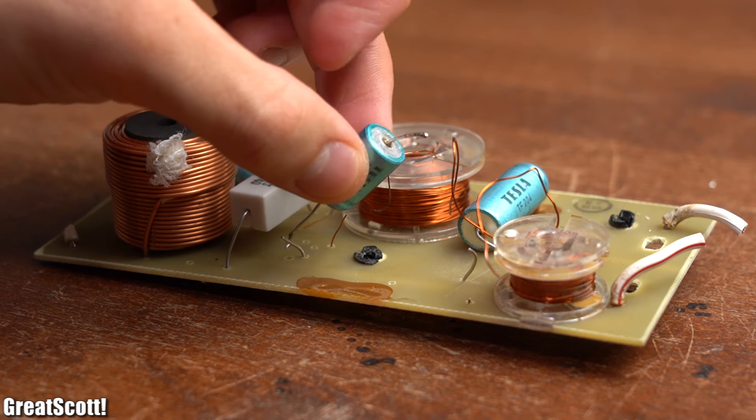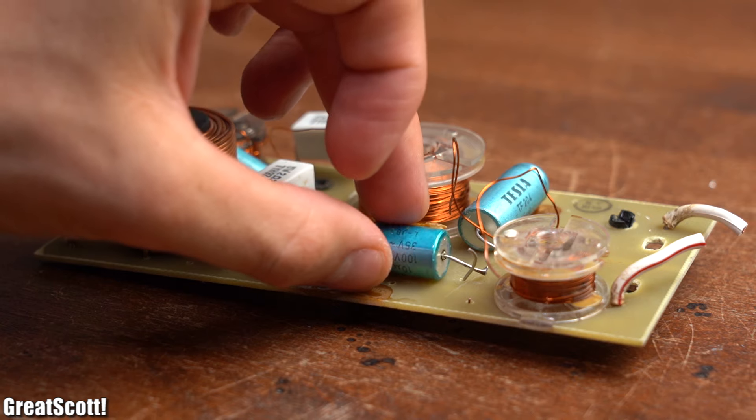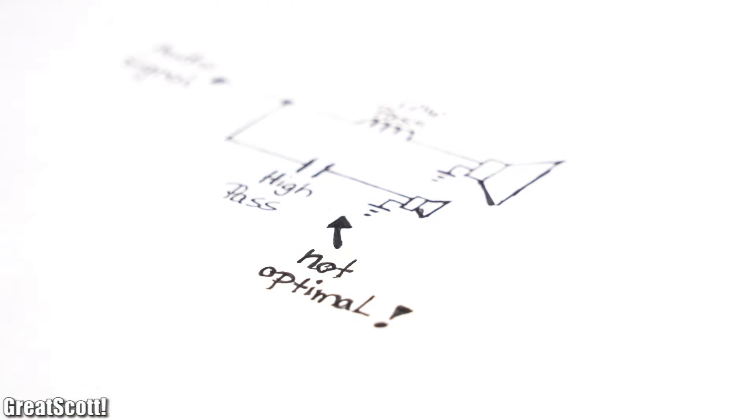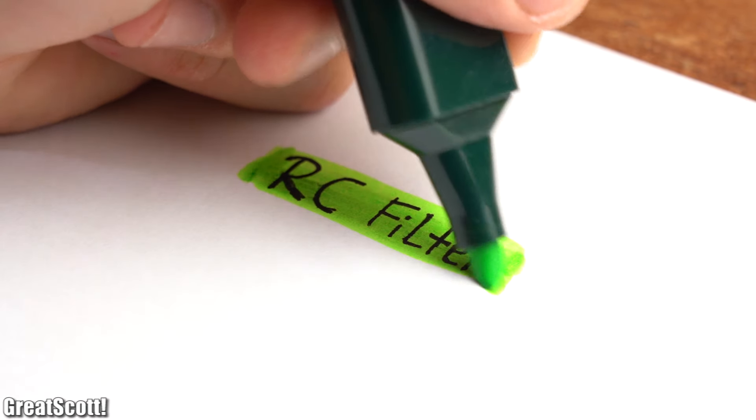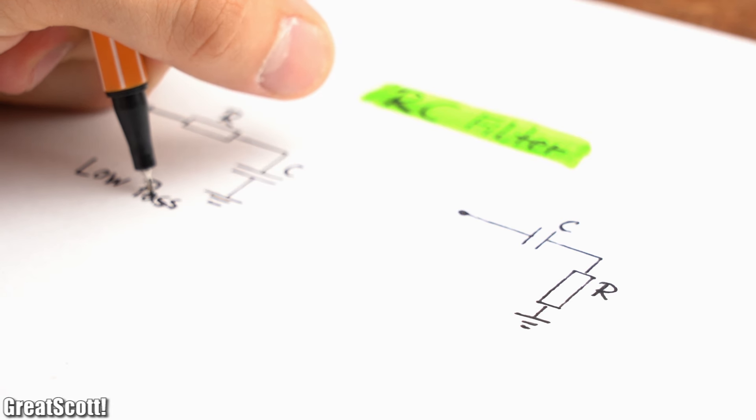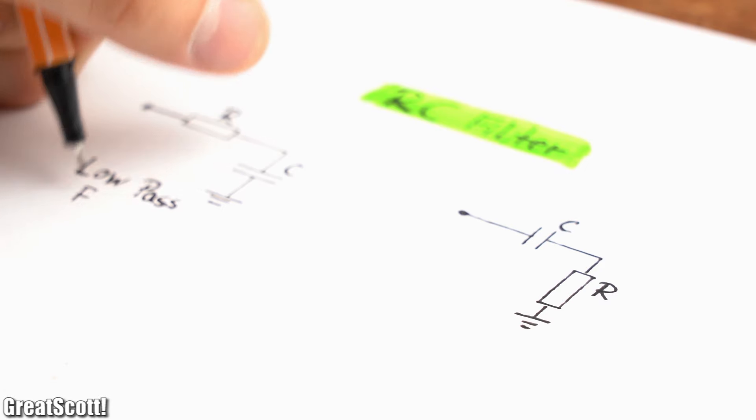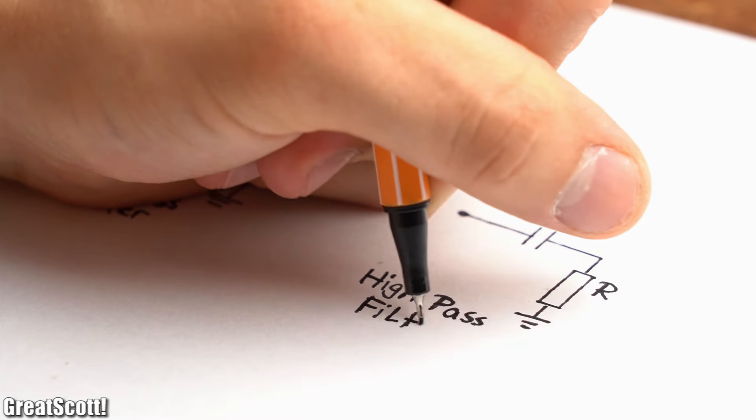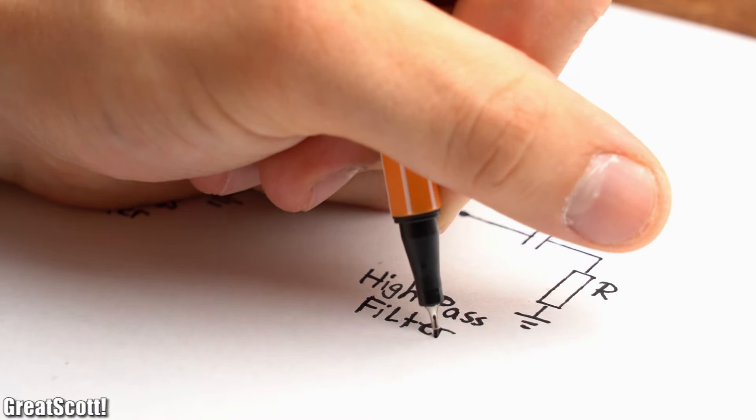But since the commercial crossover features a lot more components, this may not be the optimal solution yet. So let's move on to the popular RC filter, which like the name implies consists of a resistor and capacitor whose position can be swapped to build up either a high-pass or low-pass filter.